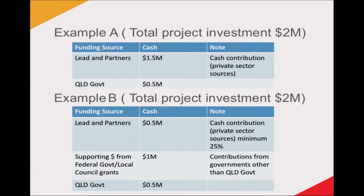Just to give you the examples: if the project is $2 million, that's half a million dollars of Queensland Government funding and $1.5 million of funding from the project partners — and that's cash. If you had federal or local government funding for the same project, half a million of Queensland Government funding, you might have a million dollars of other government funding, but you'd always need at least 25% of private sector cash. The leverage requirement is really important to us — three to one.